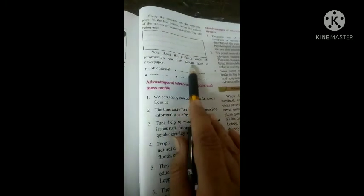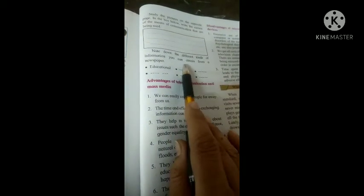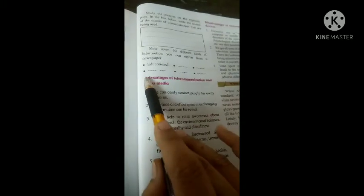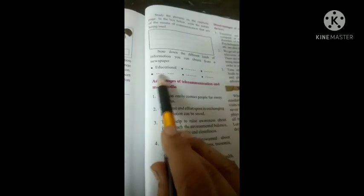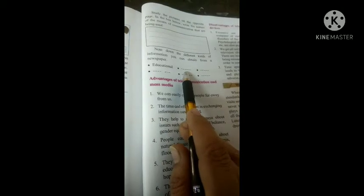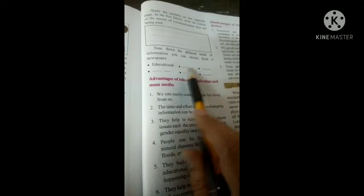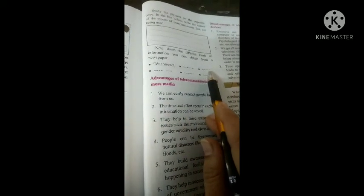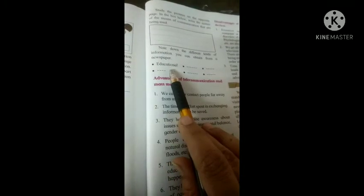Note down the different kinds of information you can obtain from a newspaper. What kind of information can you obtain? Educational, political, sports, advertisement, or employment information.